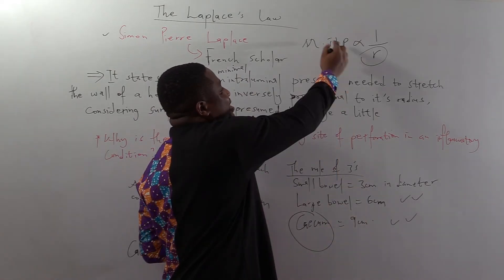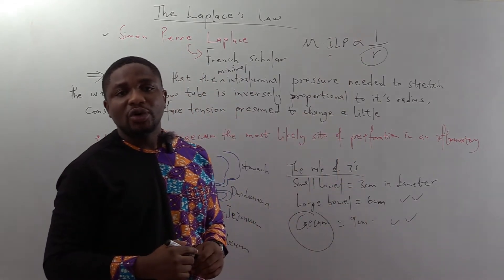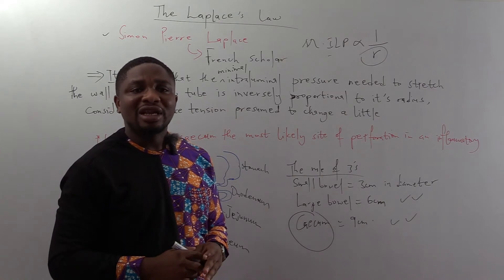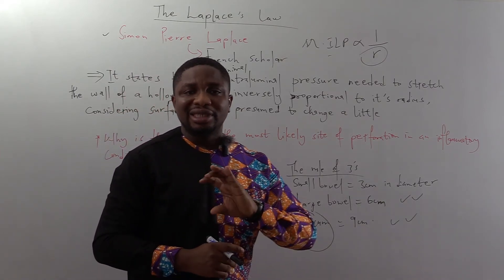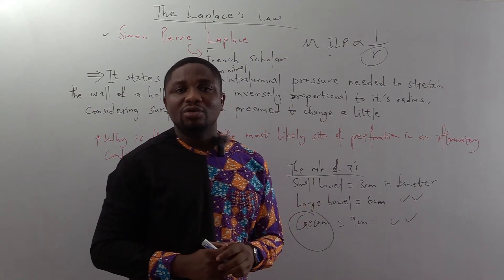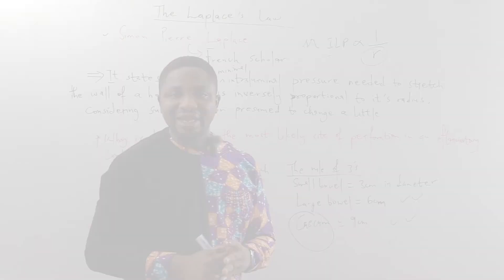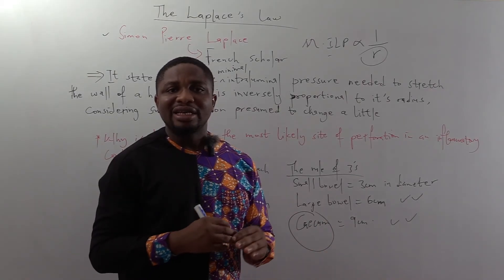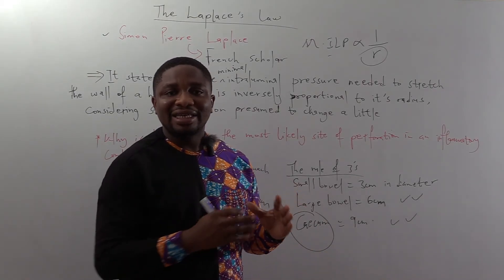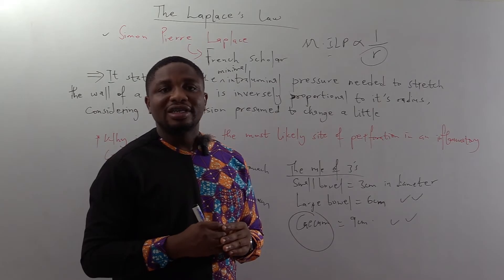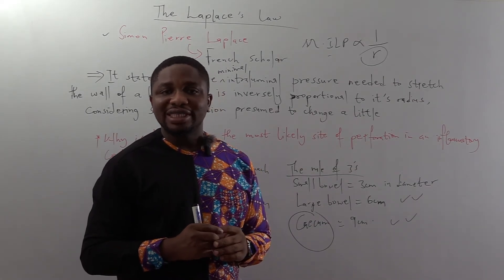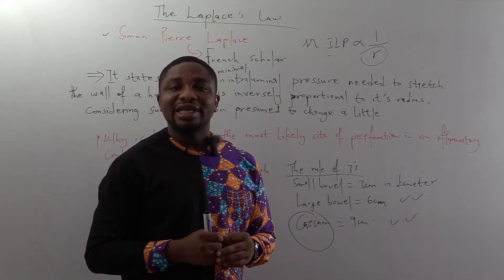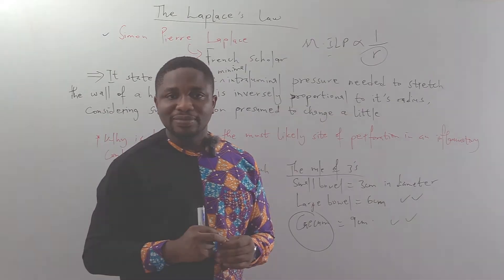And if you insert that in this relationship, the intraluminal pressure that the cecum would require to distend or be stretched would be the least. Meaning that if you take the segment of the bowel and equal pressure is applied to the wall, the cecum would require the least minimal pressure to distend or stretch leading to its perforation.